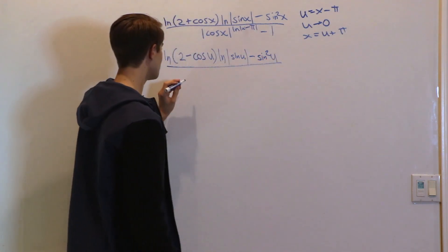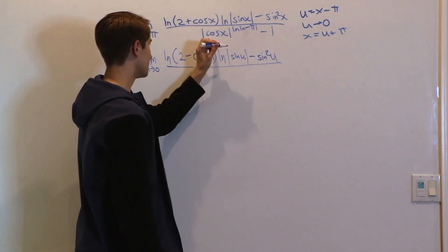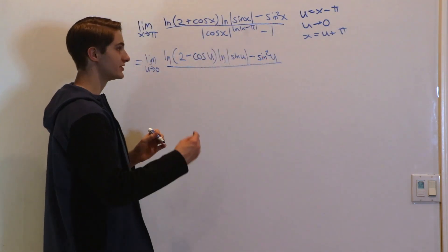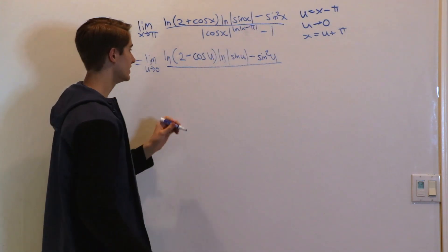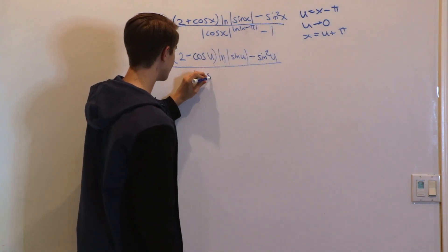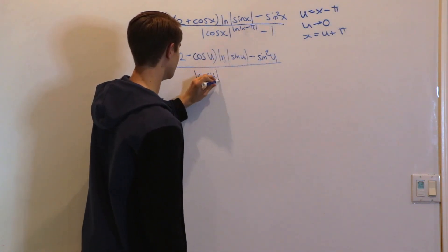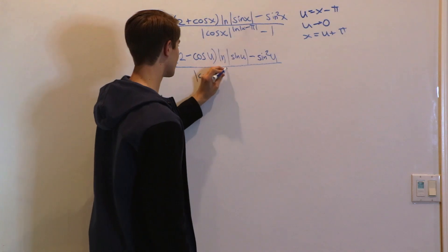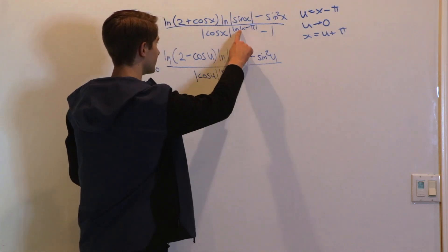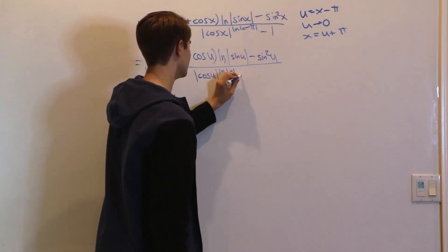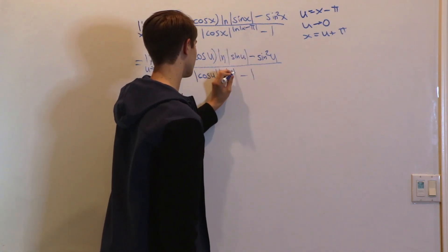Then we divide by |cos x|, which again turns into |-cos u|. Because it's in the absolute value, it doesn't matter. And then we have the natural log of (x - π), which gives us u, and then minus 1.